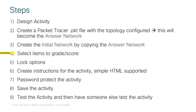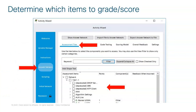After defining the networks, select which items to score — configure message of the day, hostname, IP addresses on all interfaces. Then select what to score. You also have lock options to decide which things to lock — for example, locking the logical workspace or the delete tool so students cannot delete anything or add devices. Create instructions for the activity — very important so students know what to do. Password-protect the activity, otherwise students can open Activity Wizard and see everything. Save, test, then send to students.